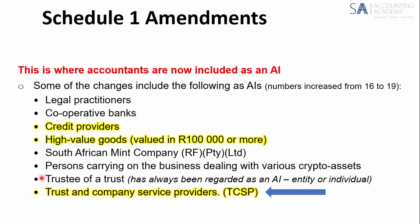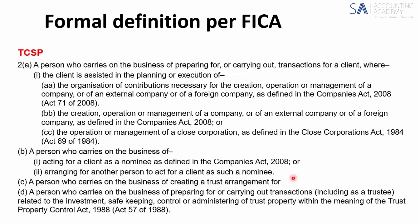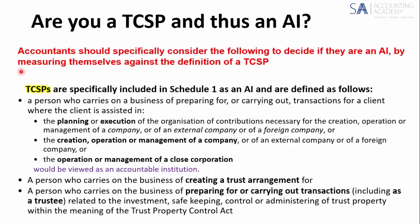Trustee of a trust has always been regarded as an AI, whether you're an entity or an individual — I've put that on the list because people tend to forget about it. And then the one that knocked the wind out of our sails: trust and company service providers, or TCSP. If we look at what a TCSP is, the formal definition can be found in Section 2A of FICA. All accountants have to specifically consider whether they're an AI by measuring themselves against the definition of a TCSP — trust company service provider.